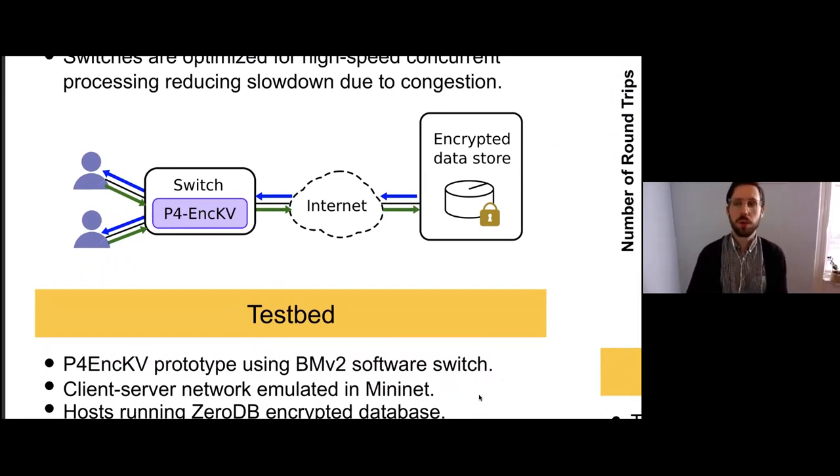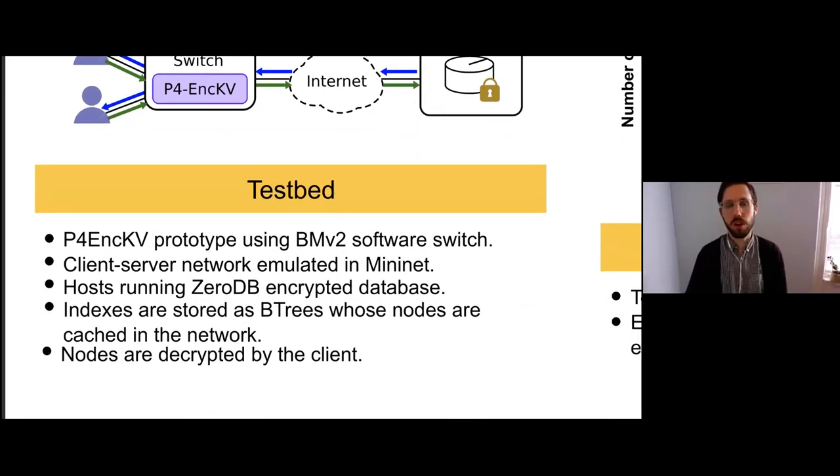On the data plane layer, we're going to try and do as many operations as we can. For the system, we do it in a BMV2 software switch running a client server network in Mininet. The host and server are running a 0db encrypted database. Everything's encrypted on the client side, and the client will build Btree indexes and store those in the server. On future lookups, the client will request the root of the Btree. The server will send that, the client will decrypt it, and that'll tell it what to request next. So traversing an index is a series of round trips between the client and server.